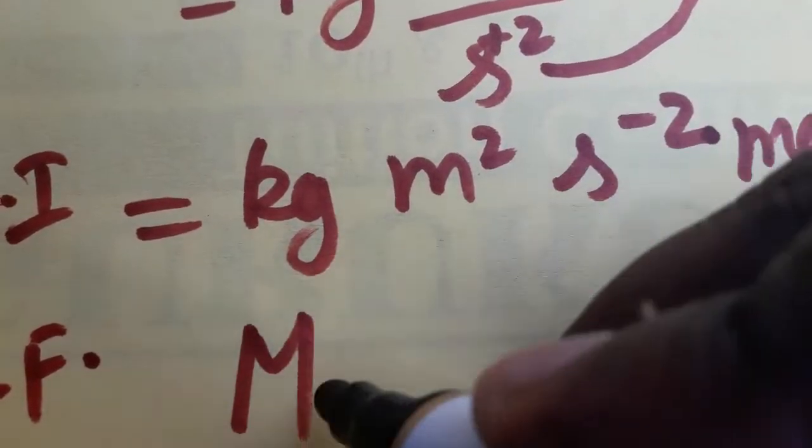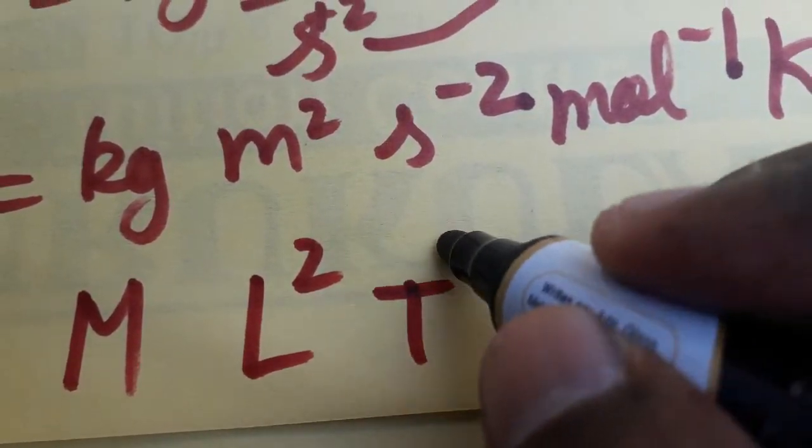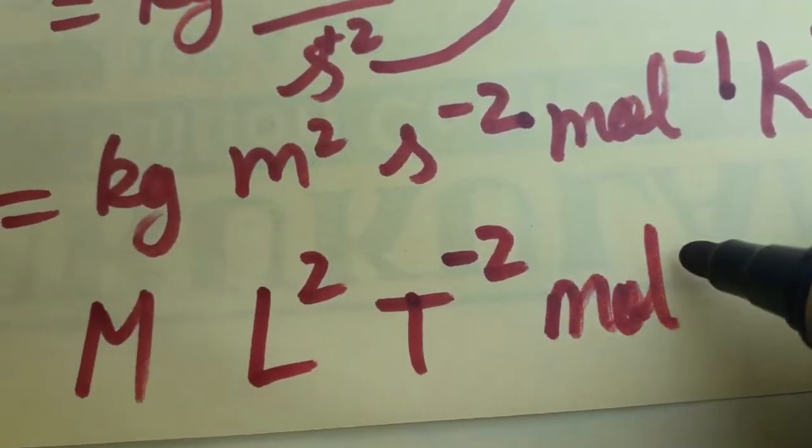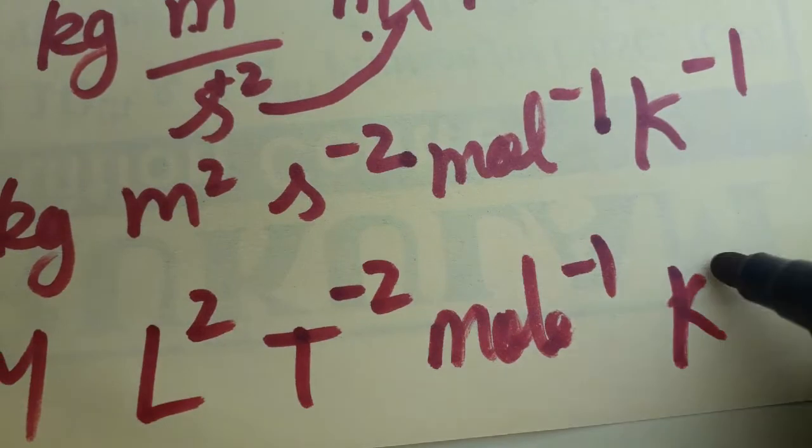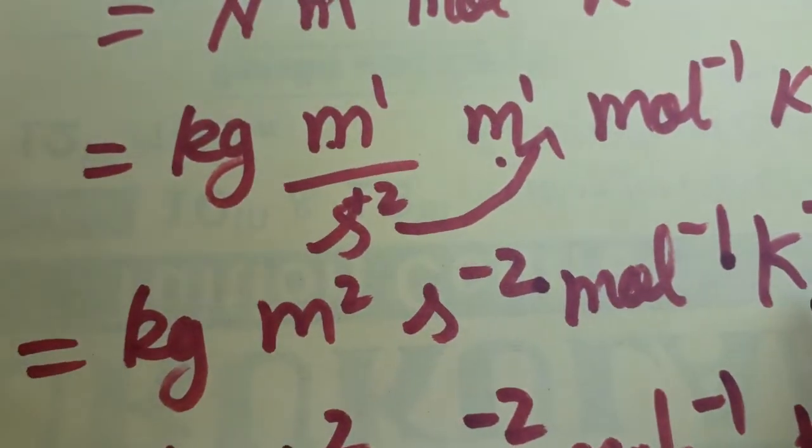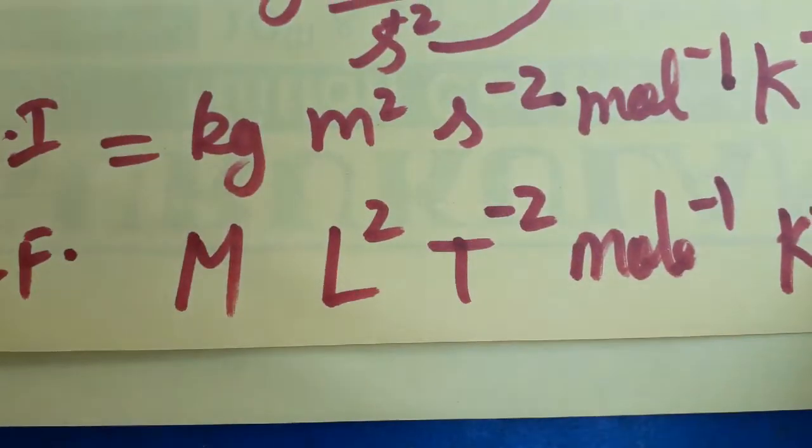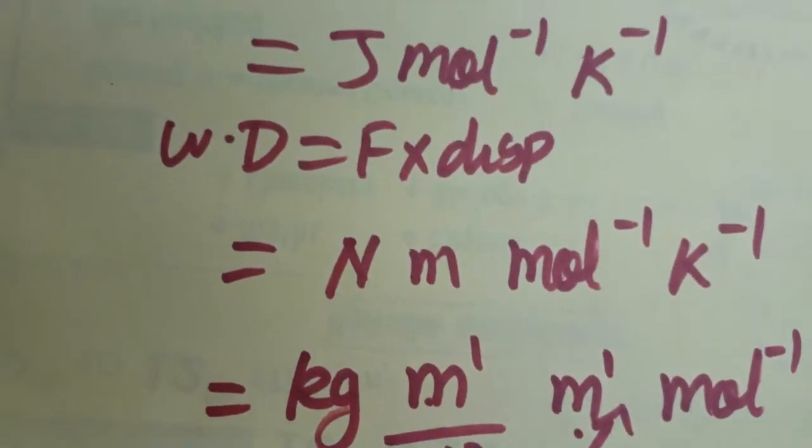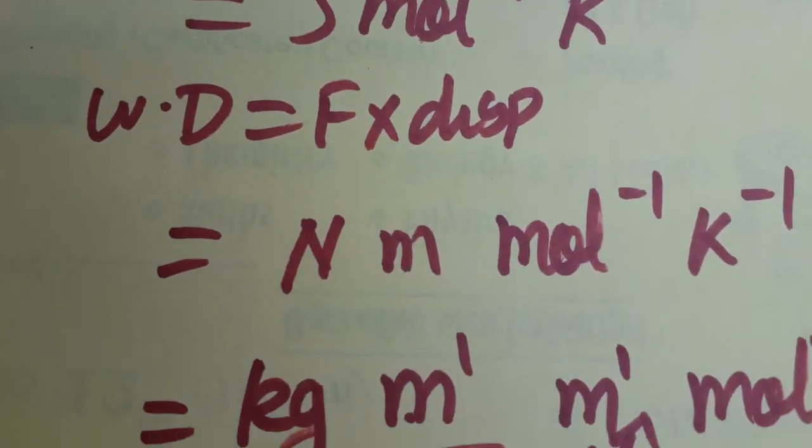Mass will be M, length will be L, time will be T power minus two, mole will be mole, we are taken as minus one, kelvin minus one. This is the SI unit of molar mass and this is the dimensional formula for molar mass. Thank you.